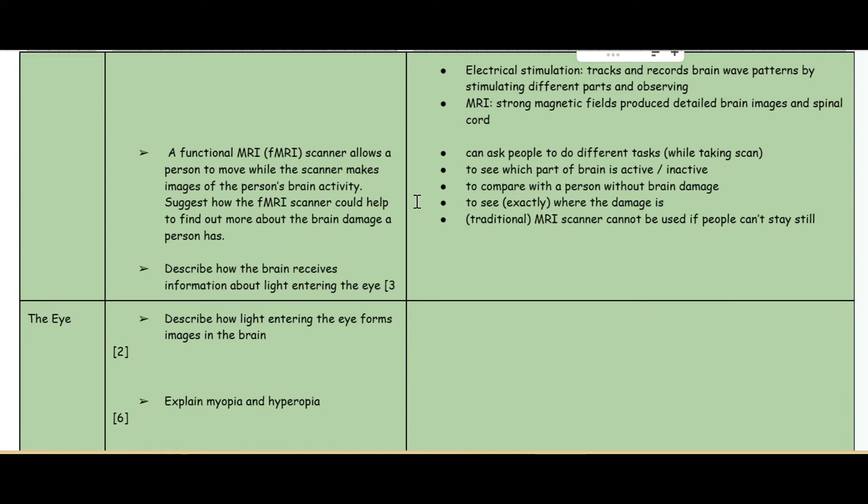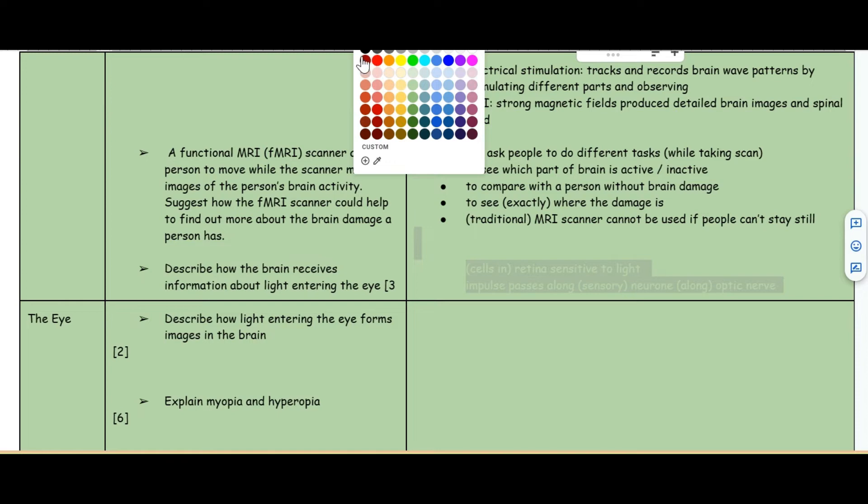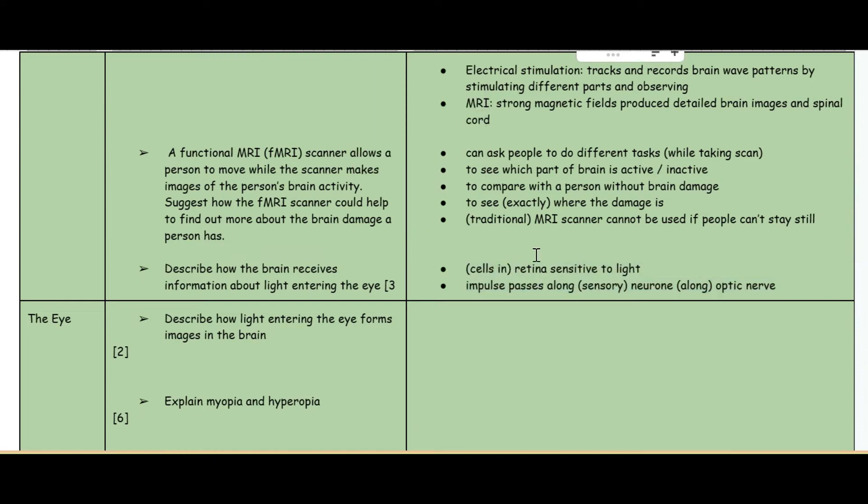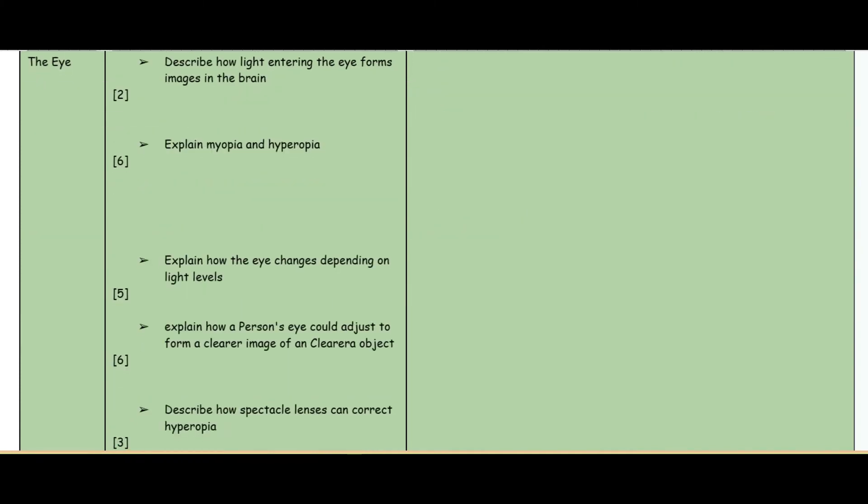The final question about the brain: describe how the brain receives information about light entering the eye. You have the cells in the retina - the retina is this group of receptor cells in your eye. It's sensitive to light and the impulse passes along the sensory neuron and along the optic nerve and then to the brain.